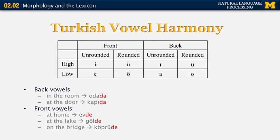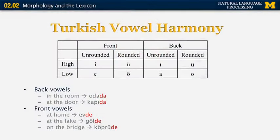Let me show you some interesting phenomena related to morphology in different languages. The first is Turkish vowel harmony. Vowels can be grouped into front and back, and high and low. In Turkish there is an additional distinction between rounded and unrounded vowels — every time you have a vowel formed with an unrounded mouth position, you can round your lips and change the sound. So in Turkish there are eight vowels in total, forming all possible combinations of front/back, high/low, and rounded/unrounded.